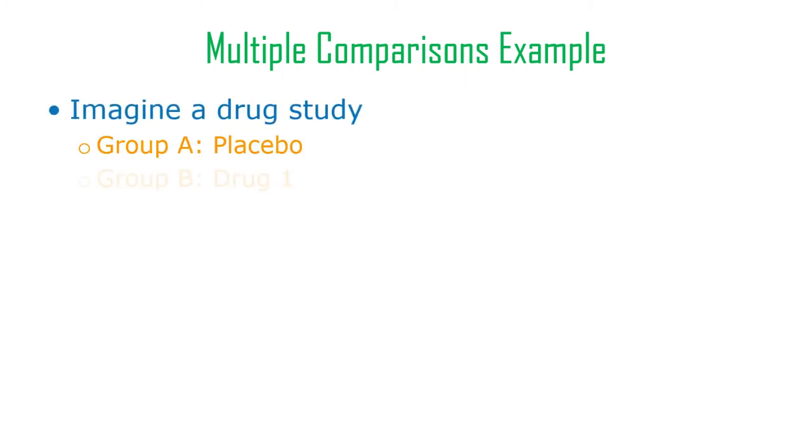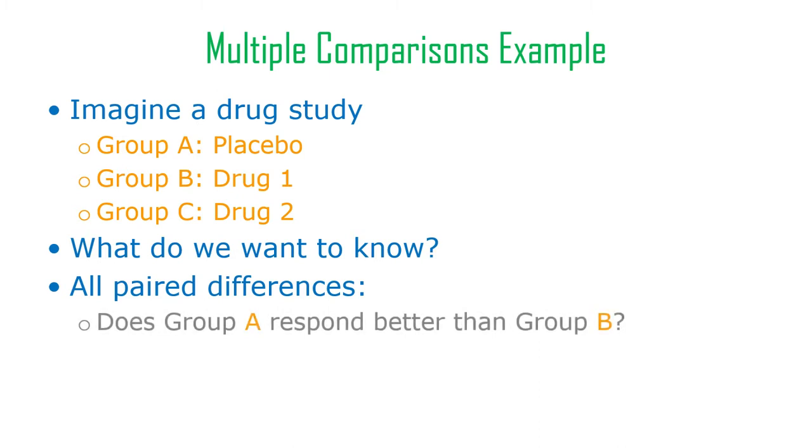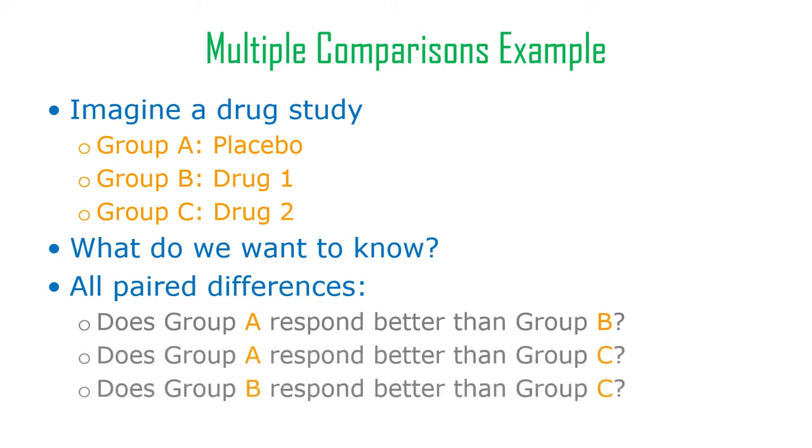Imagine a drug study. Let's say you have three groups: group A is your placebo, group B is drug one, and group C is drug number two. Often we want to know all paired differences. Does group A respond better to the drug than group B? Does the placebo group respond better than drug two? Does drug one respond better than drug two? We want to do three t-tests there. We'd do a t-test for A versus B, one for A versus C, and one for B versus C.